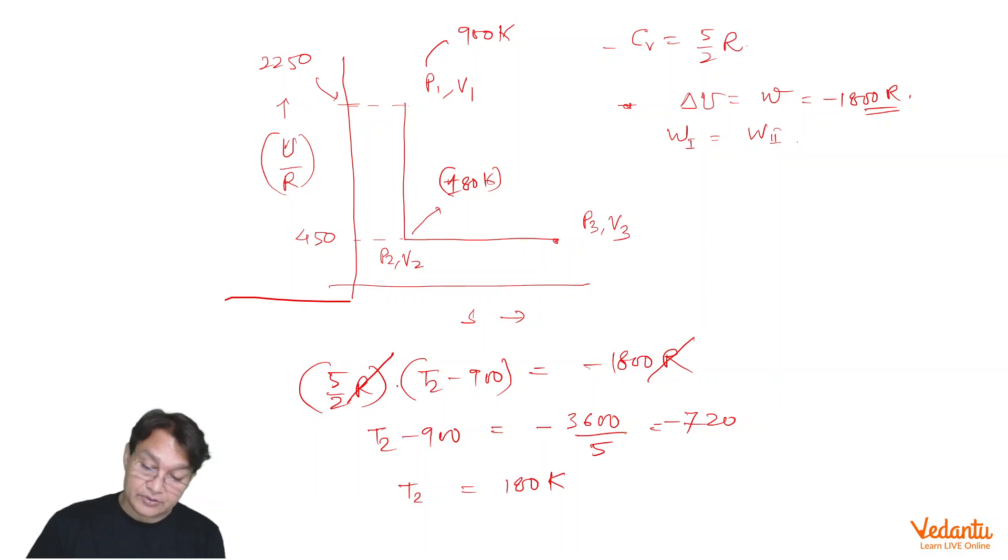Initially, temperature was 900 Kelvin. And in this process, we have seen that internal energy is going to be constant. And it is an ideal gas process. So naturally the temperature here also must be 180. So this process must be an isothermal process. Second process is isothermal process.